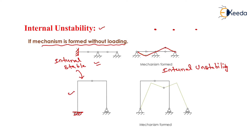When a hinge support is present and there are three consecutive hinges, mechanism formation will occur, making the structure internally unstable. That is all about internal instability.